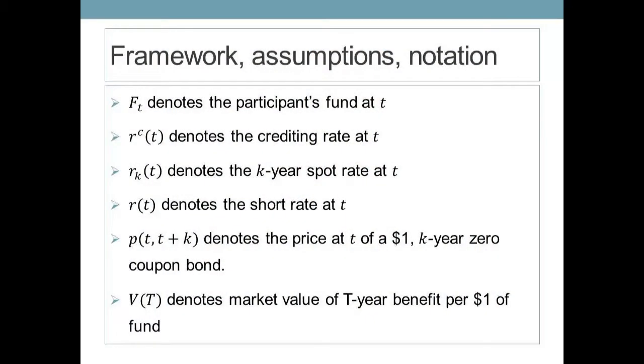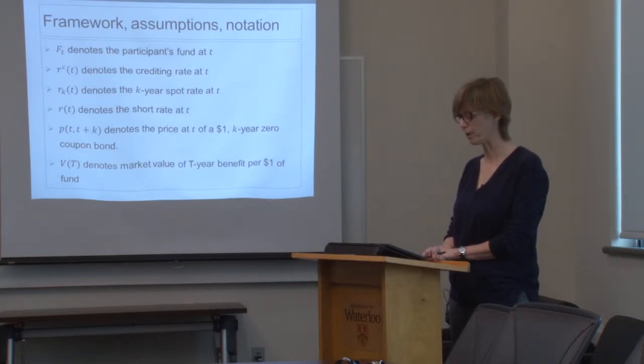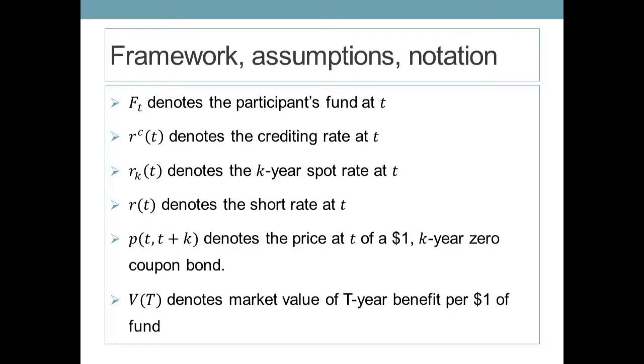First, we need some notation to develop the valuation formulas. We're going to let F_T denote the participant's fund at T — this is a notional fund, the accumulated contributions under the cash balance scheme regulations. Contributions are accumulated at a crediting rate, denoted R^C at T. At time T we know what the crediting rate is, but before time T it will generally be a random variable. We use the yield curve, where R_{KT} denotes the K-year spot rate at time T — observable at T, but a random variable before T.